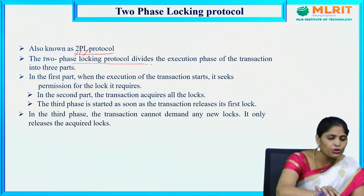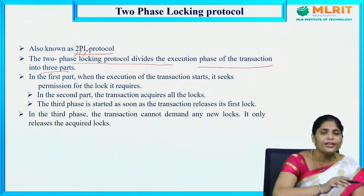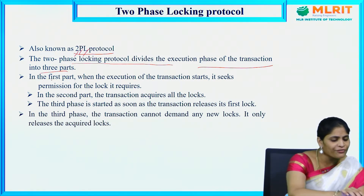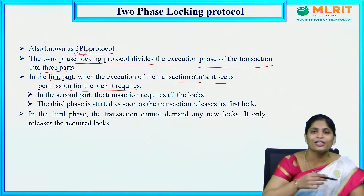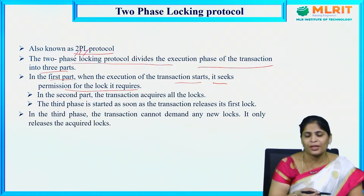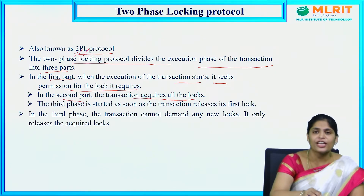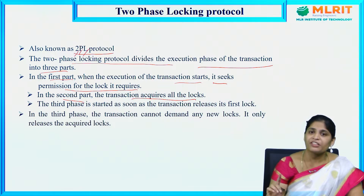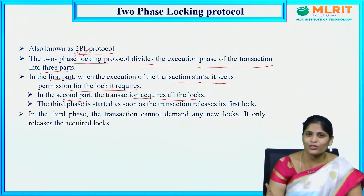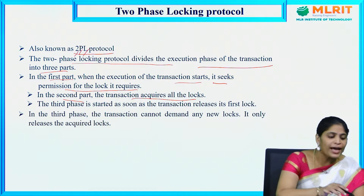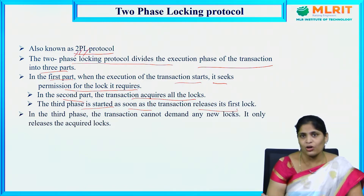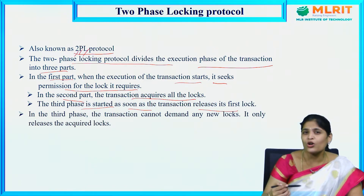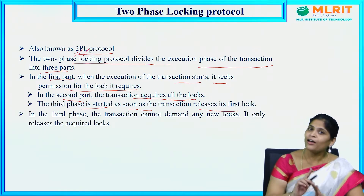The two-phase locking protocol divides the execution phase of a transaction into three parts. In the first part, when execution of a transaction starts, it seeks permission for the locks it requires. In the second part, the transaction acquires all the locks. The third phase starts as soon as the transaction releases its first lock — it is all about releasing locks one by one which were acquired in the second phase.